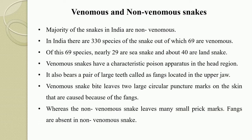Venomous snakes have a characteristic poison apparatus in the head region, including a pair of large teeth called fangs located in the upper jaws. A venomous snake bite leaves two large circular puncture marks on the skin caused by the fangs. Based on whether these marks are present or absent, we can judge whether the bite was from a venomous or non-venomous snake, because fangs are generally absent in non-venomous snakes.